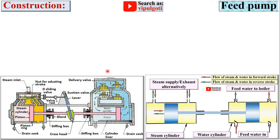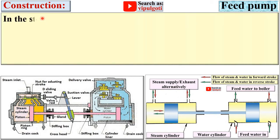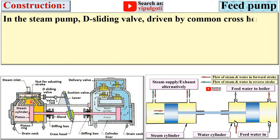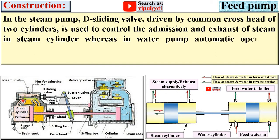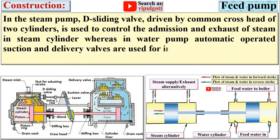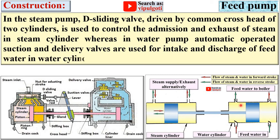This figure is used to understand the construction and can be used for examination purposes. In the steam pump, a D-slide valve driven by the common cross head of the two cylinders is used to control the admission and exhaust of steam in the steam cylinder. In the water pump, automatically operated suction and delivery valves are used for the intake and discharge of feed water in the water cylinder.